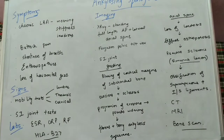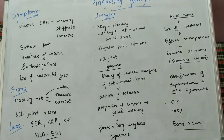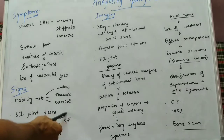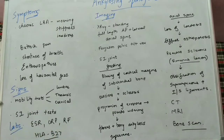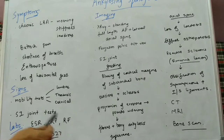After the signs, we have the various lab investigations. ESR and CRP will be mostly elevated in this patient. Rheumatoid factor will be negative, as it is a seronegative spondyloarthropathy, and HLA-B27 will be positive in about 95% of patients.